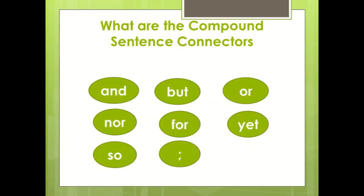What are the compound sentence connectors? Or sometimes we call them coordinators. They are: and, but, or, nor, for, yet, so, and the semicolon.